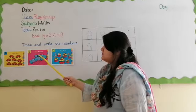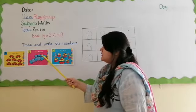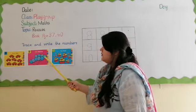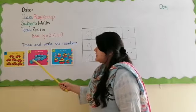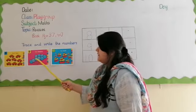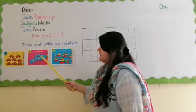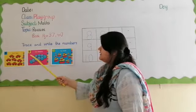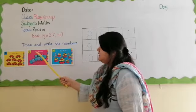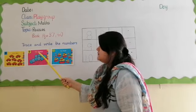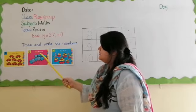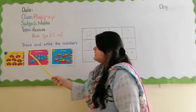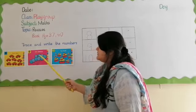Let's count. 1, 2, 3, 4, 5, 6, 7, 8, 9. 9 balloons.